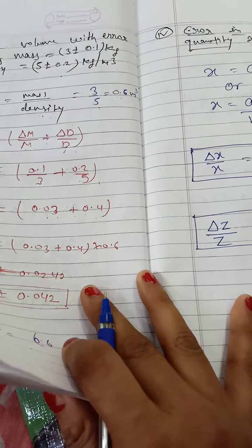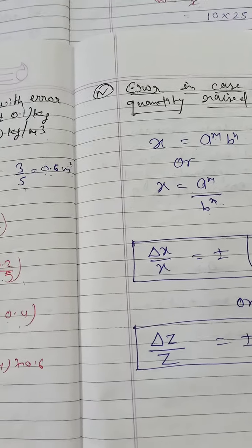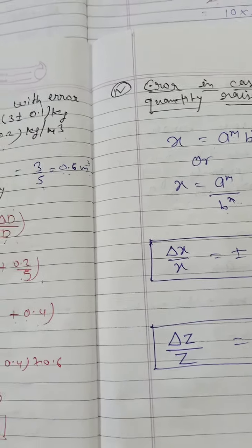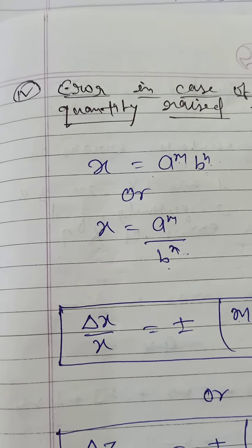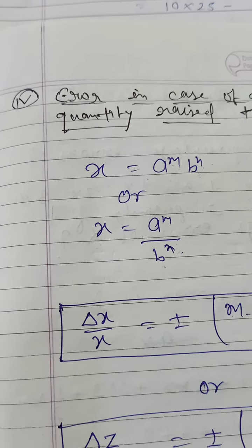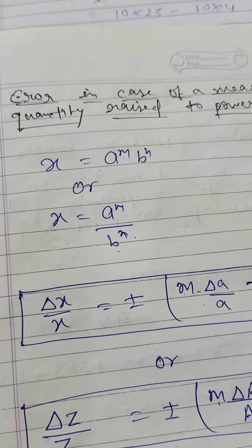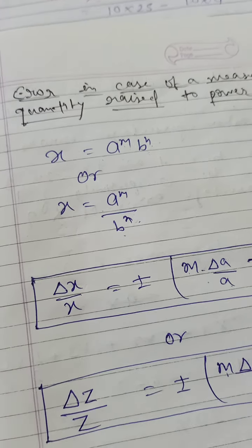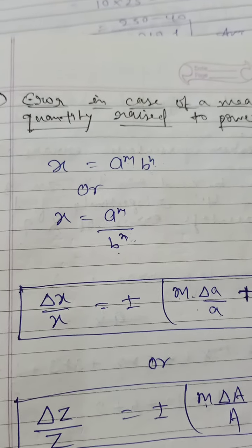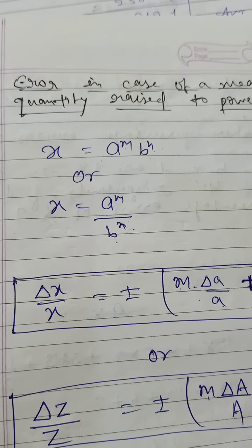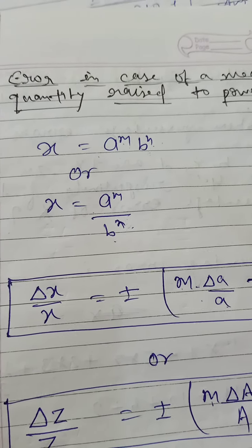Now we will see the next topic: error in case of a measured quantity raised to a power — this is the last combination of error type. We have already covered addition, subtraction, multiplication, and division.